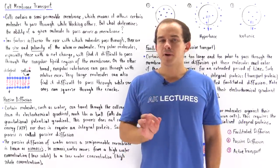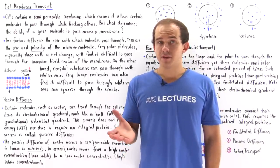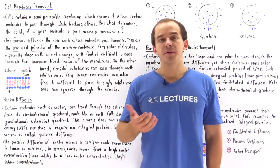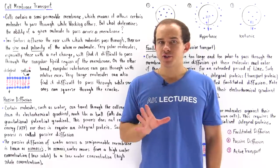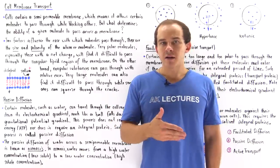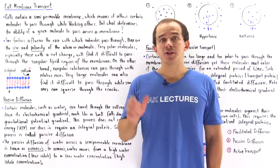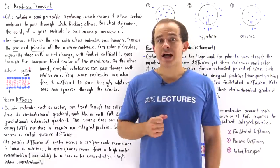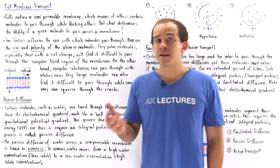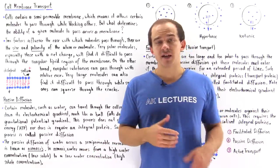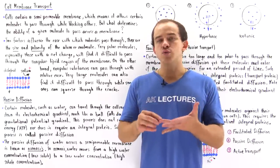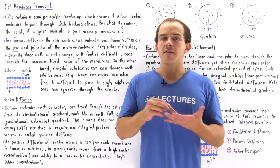Cells contain a semi-permeable membrane, which means certain materials will pass across the membrane while others will be blocked. Two factors influence the ease with which a molecule or atom passes across the cell membrane: the size of the molecule and the polarity of that molecule.